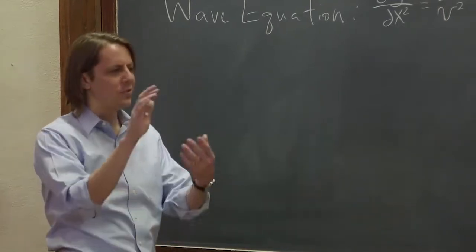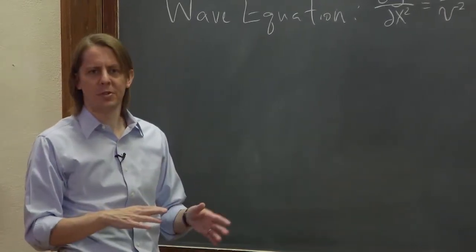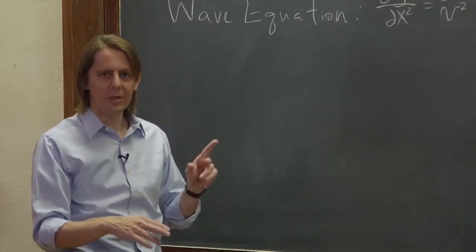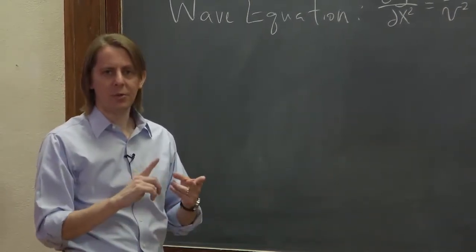So for the oscillating mass on a spring, second order differential equation, we had d²y/dt² equals something times y. So we needed an initial position and an initial velocity.